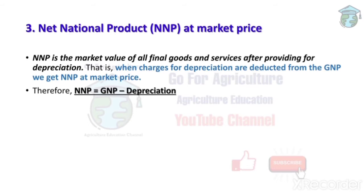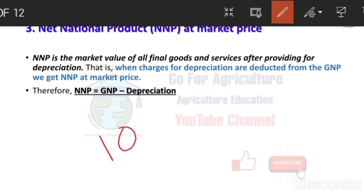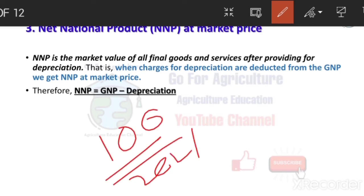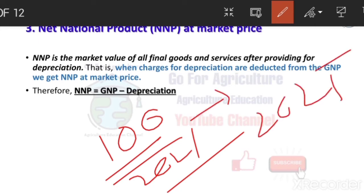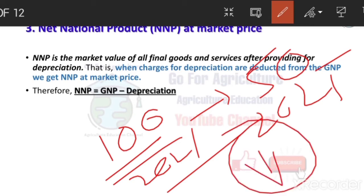Depreciation means: consider a truck. The price of the truck in 2021 is, for example, 100 rupees. We know that if time passes, the price will decrease. In 2021 it is 100 rupees — suppose in 2025 the price has decreased to 50 rupees. So the value of the truck has decreased. This decrease is what we call depreciation.